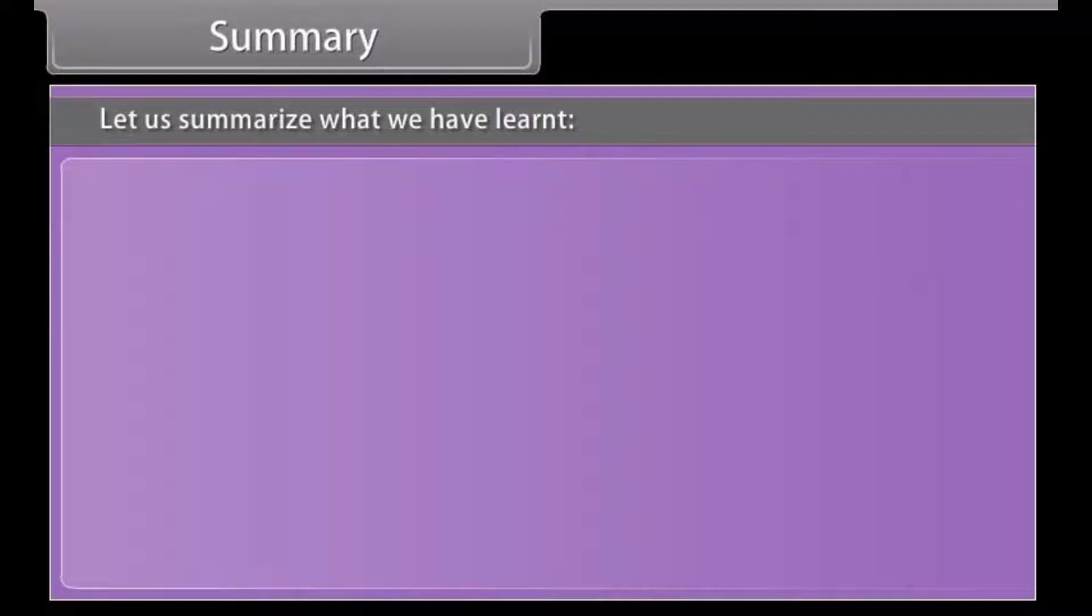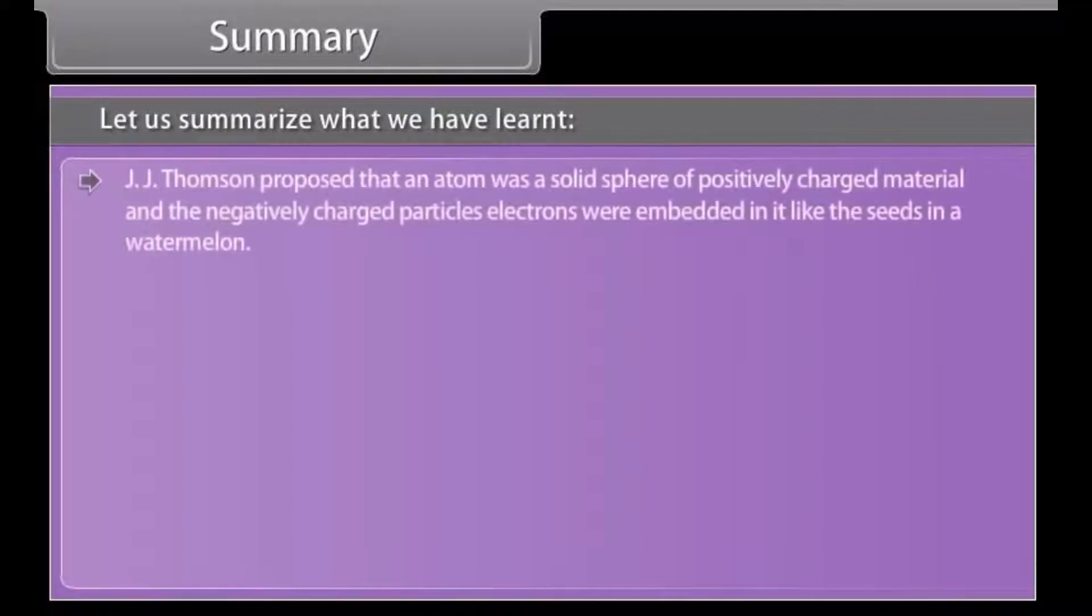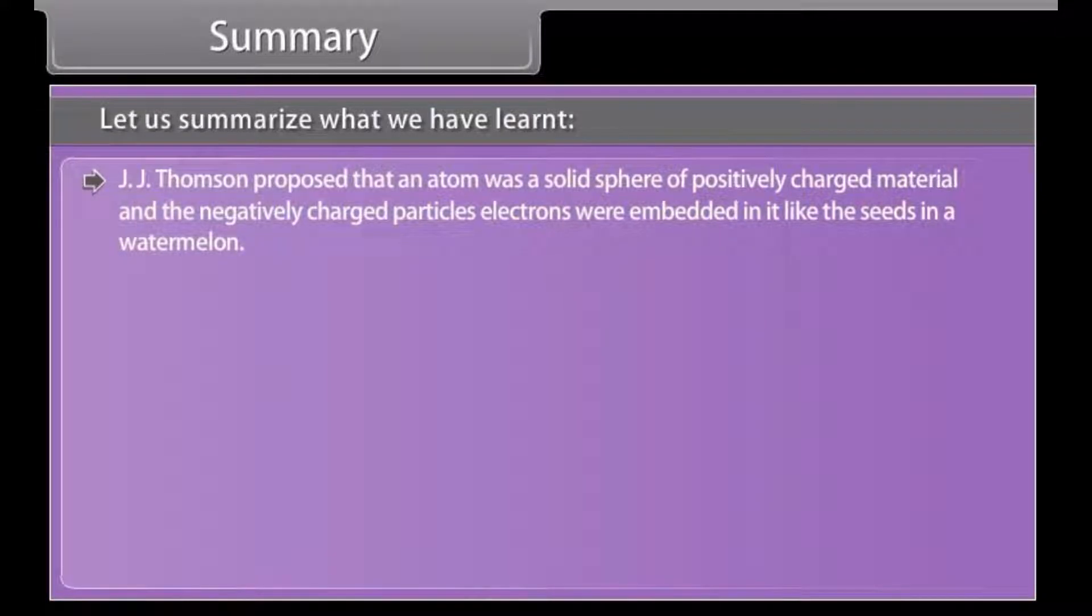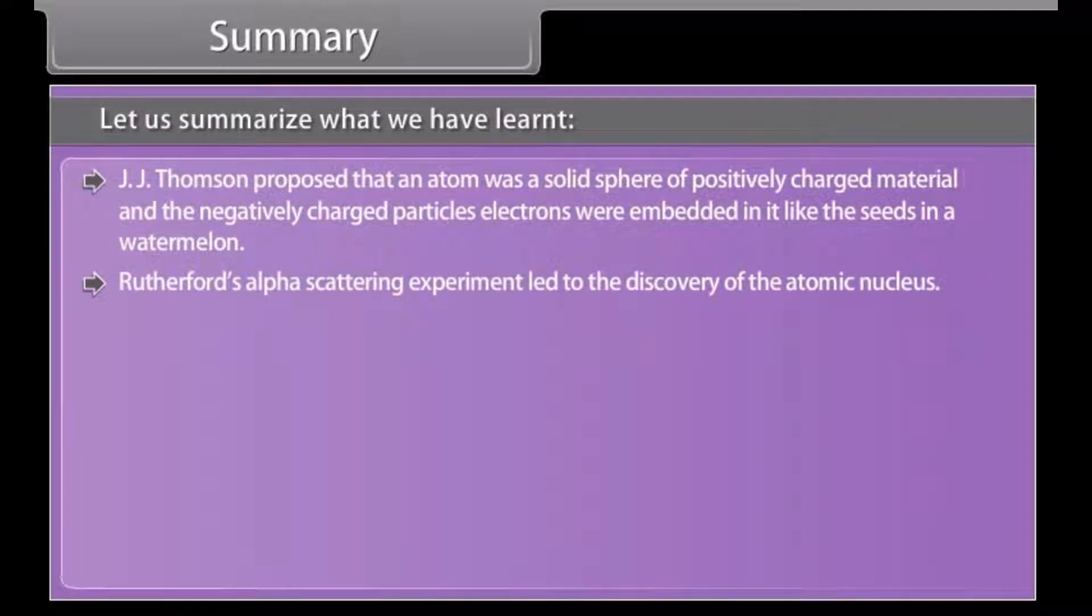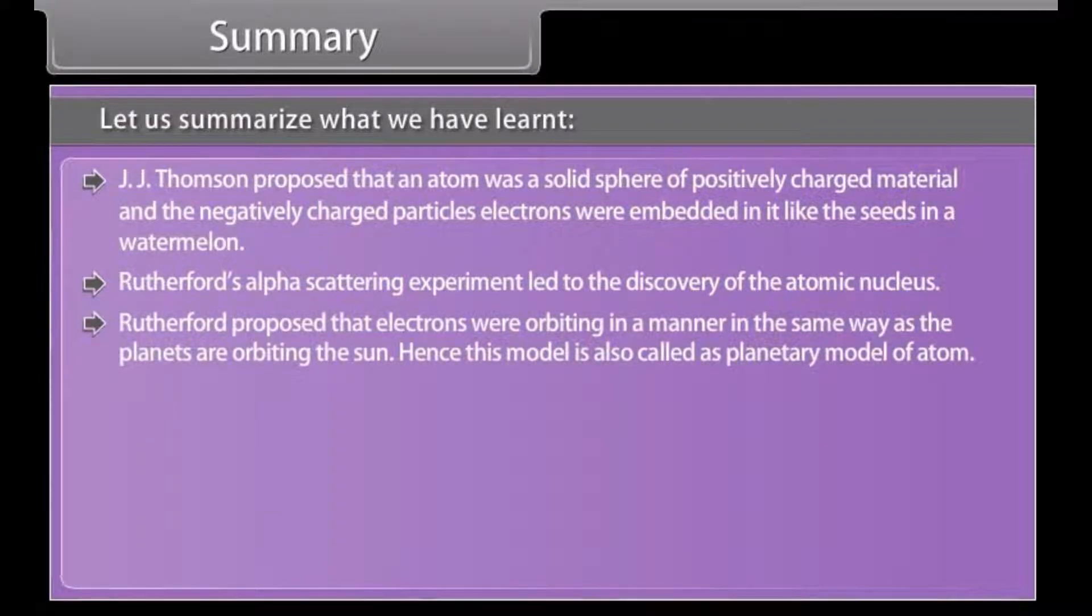Summary. Let us summarize what we have learned. J.J. Thompson proposed that an atom was a solid sphere of positively charged material and the negatively charged particles' electrons were embedded in it like the seeds in a watermelon. Rutherford's alpha scattering experiment led to the discovery of the atomic nucleus. Rutherford proposed that electrons were orbiting in a manner in the same way as the planets are orbiting the sun. Hence, this model is also called as planetary model of atom.